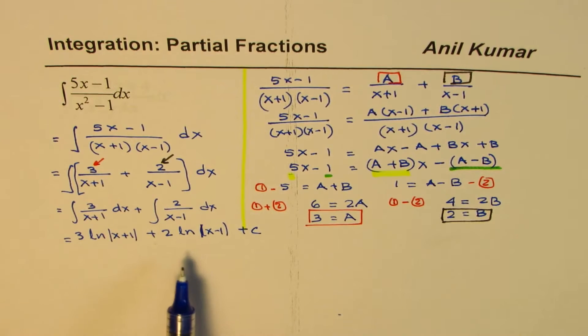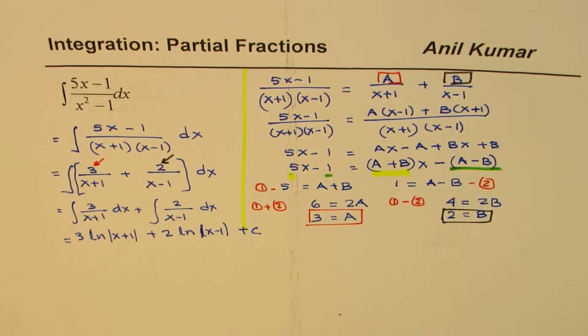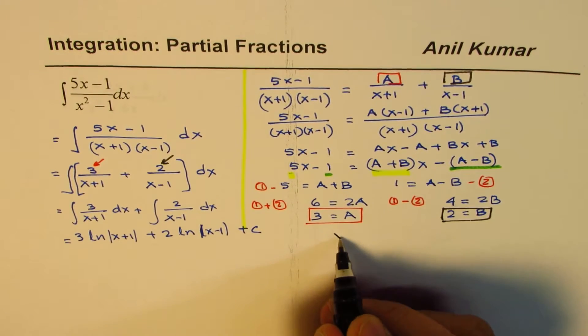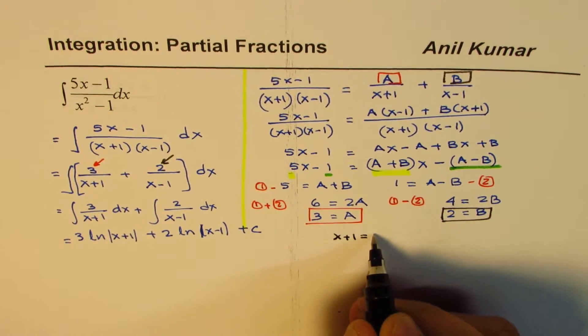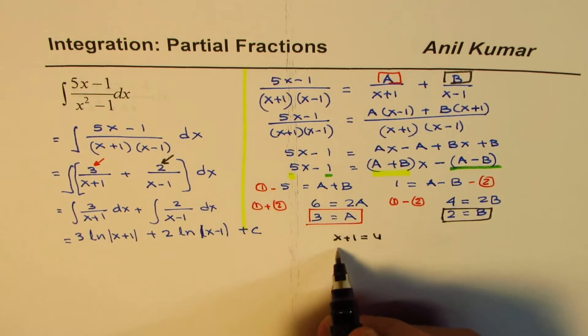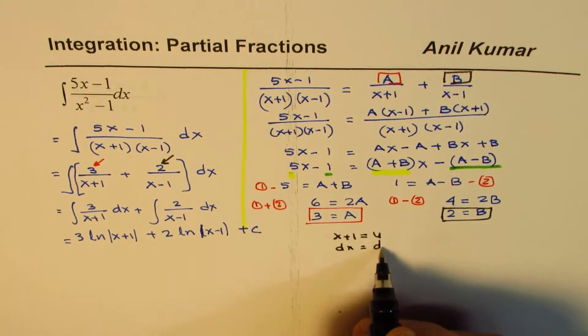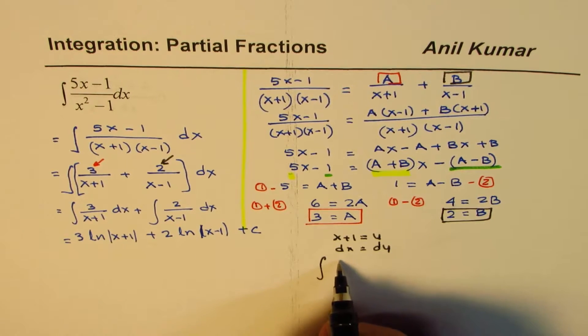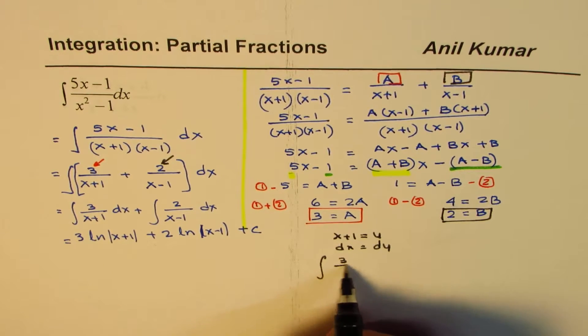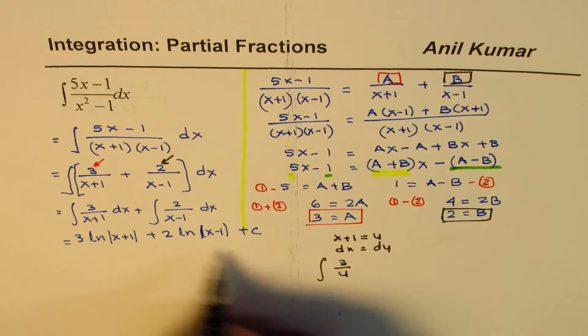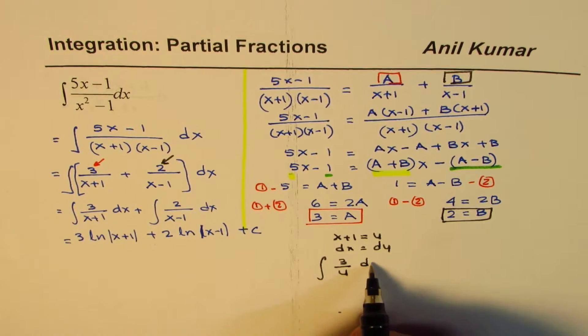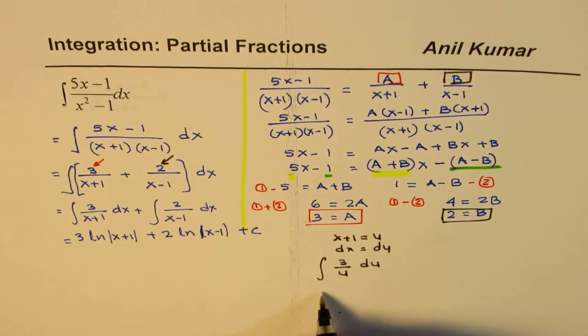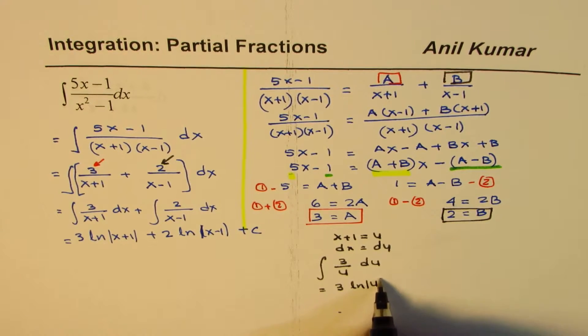So that is how you can find the integral of these functions. Some of you may use substitution, saying x plus 1 equals to u, and then dx equals to du. I am just doing the first part. And therefore, integral of this is 3, and this is over u. And dx is du. So this becomes du. And then integral of this will be 3 times ln u.